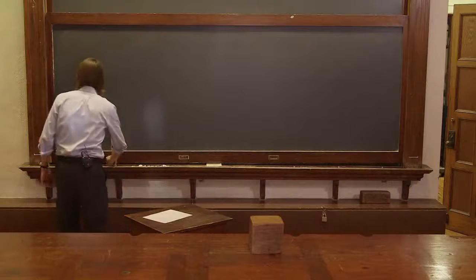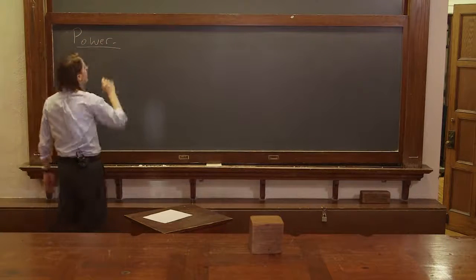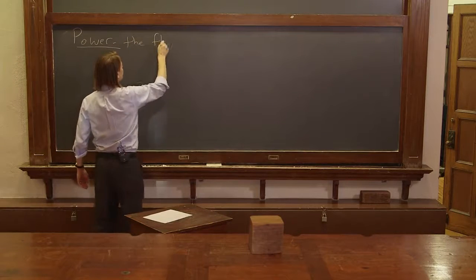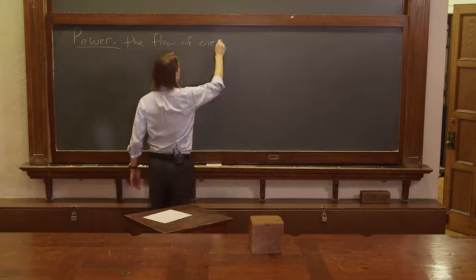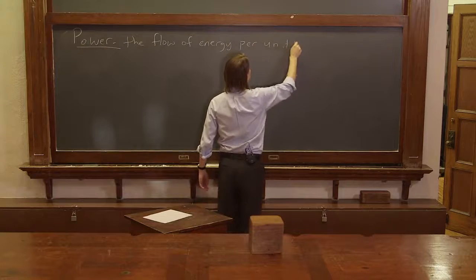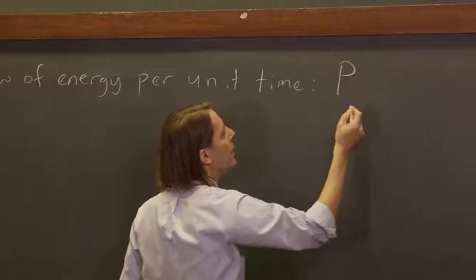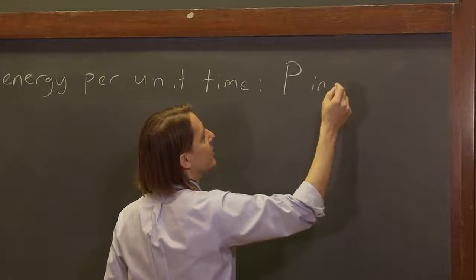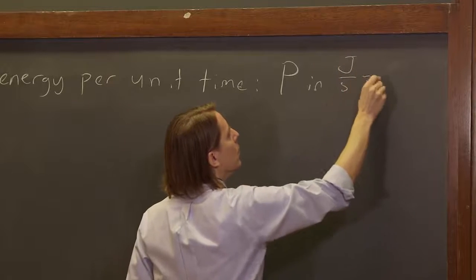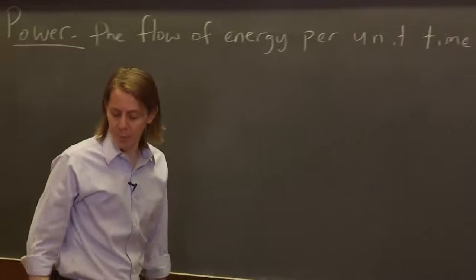Let me define power for you. Power is the flow of energy, the energy we've been talking about per unit time. We usually use P for power, and it is in joules per second, which equals a watt. So we usually use a large W for power, one watt.